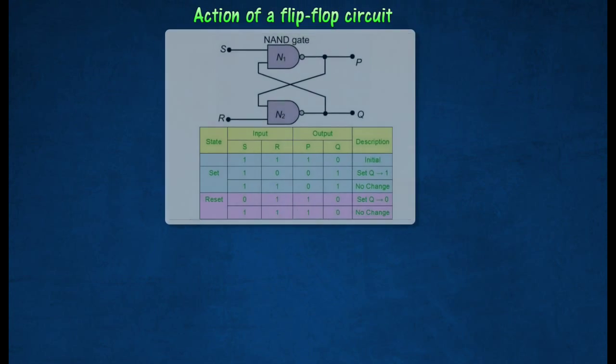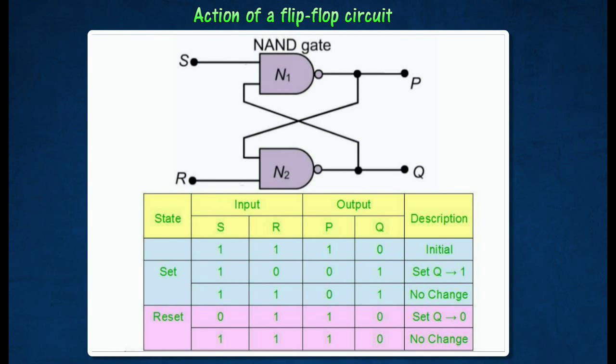The action of a flip-flop circuit can be explained by constructing the truth table. At the initial state, both inputs S and R are at logic 1. This produces output P and Q at logic 1 and 0 respectively.